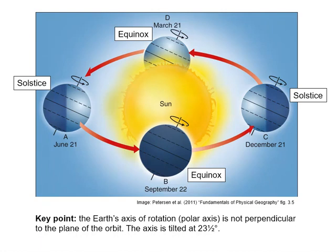If you look at what's happening at the June solstice and the December solstice, you can see how things go differently at the northern polar regions and at the southern polar regions. At the summer solstice, the northern polar region tilted towards the sun is getting loads of daylight, while the southern polar region tilted away from the sun — the southern hemisphere winter — isn't getting much light at all. The opposite is true at the December solstice.